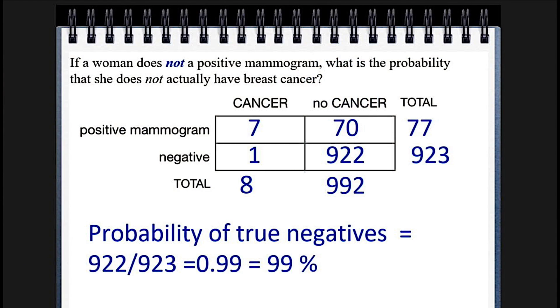We could also ask about what's called the sensitivity of the test. We can ask about the specificity — what are the true negatives. The probability of true negatives is 99%. What that means is: if you don't get a positive mammogram, you almost surely don't have cancer. Of course, if you do get a positive mammogram, you probably don't have cancer anyway. So that's something to think about.